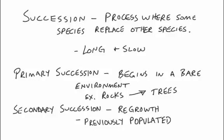There are two kinds of succession. Primary succession begins with a bare environment. For example, starting with rocks, and eventually over hundreds and thousands of years you can get an environment that has trees in it.